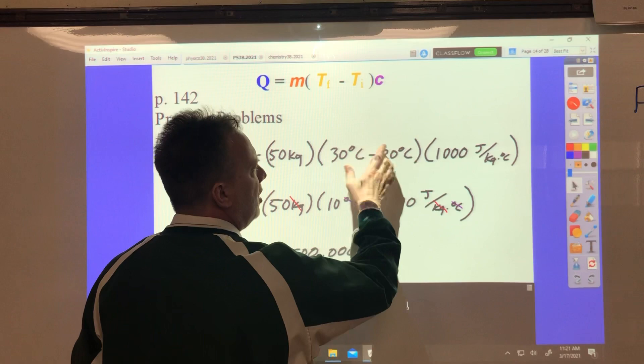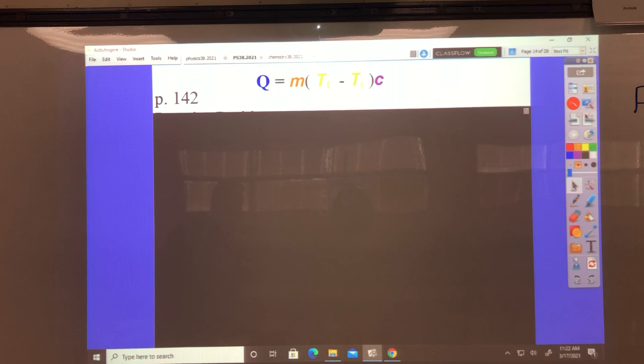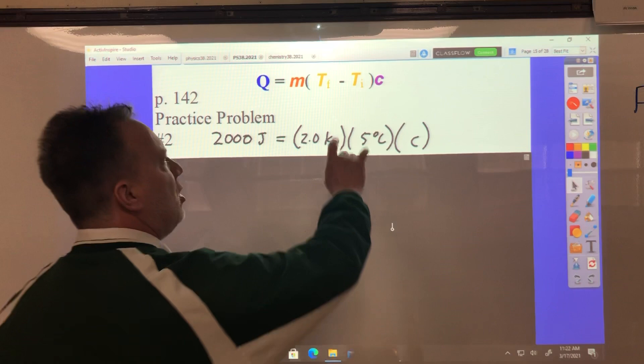Specific heat is this small c that's purple. By the way, don't confuse that with the degree Celsius sign, which has a degree thing with it and is a little capital C.